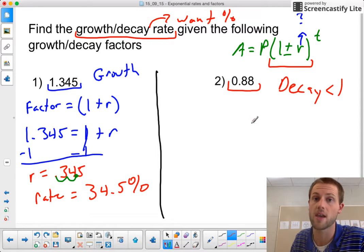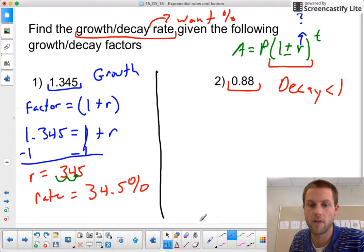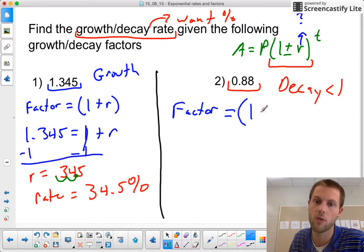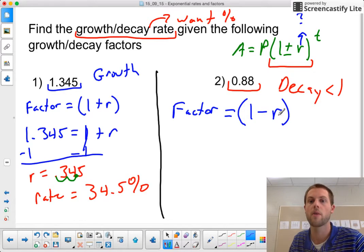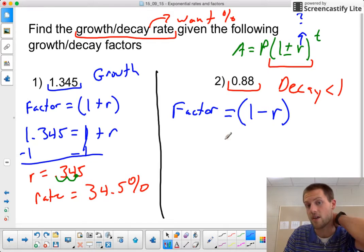So this is a decay, not a growth, but the process stays the same. My factor is still going to be given by this equation, but now rather than having my 1 plus my r be my growth factor, it's going to be actually 1 minus my r, since I'm dealing with a decay rate.